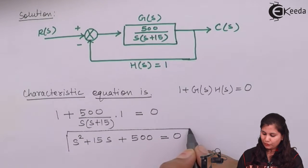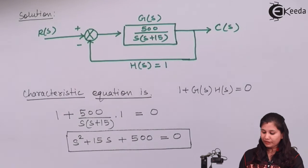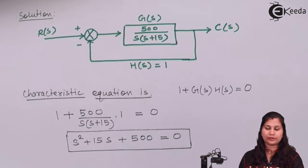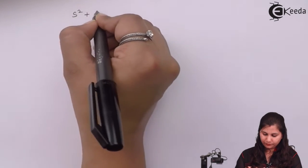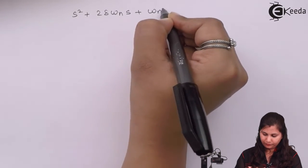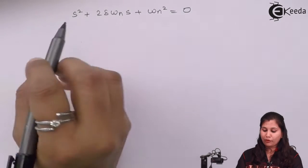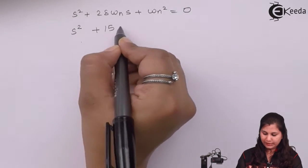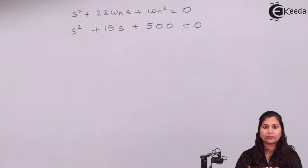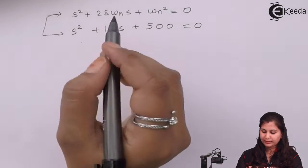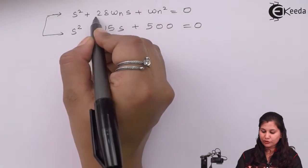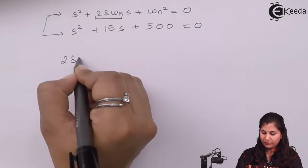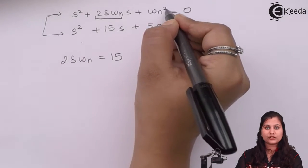This is the characteristic equation of the system. Now if we compare this characteristic equation with the general standard form of a second order control system, the equation we got is S² + 15S + 500 = 0. Comparing, the coefficient of S is 2δωn, so 2δωn = 15, and ωn² = 500.